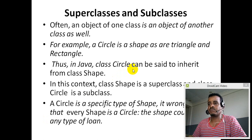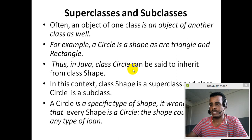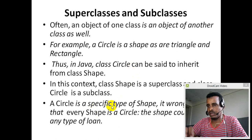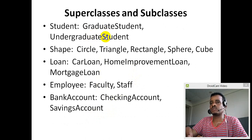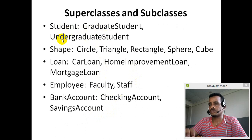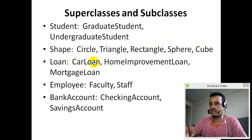In Java, class circle can be said to inherit from class shape. Another example: superclass is student, subclasses are graduate student or undergraduate student. What about circle, triangle, rectangle, sphere, cube? Another example: car loan, home improvement loan, mortgage loan — these are subclasses of a loan superclass.